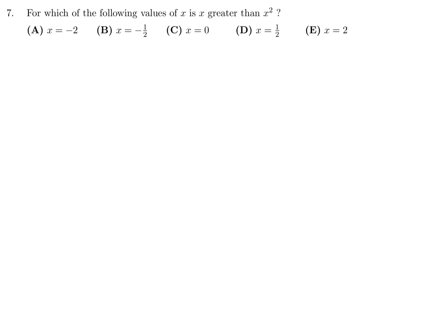For which of the following values of x is x greater than x squared? When x is minus 2, x squared would be 4, that's not greater. When x is minus a half, x squared is a quarter, again not greater. Zero, those are equal. A half squared is a quarter, this is the only one so far where x is greater. And 2 squared is 4, that's less than. The only one that satisfies the condition is x equals one-half, which is choice D for number 7.